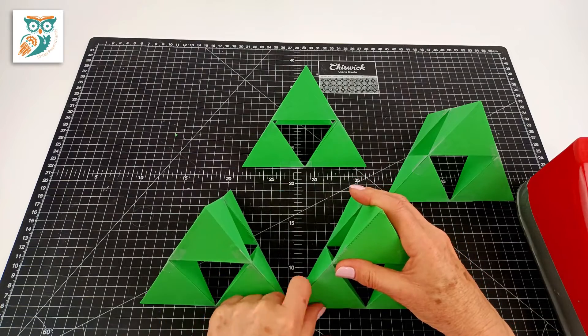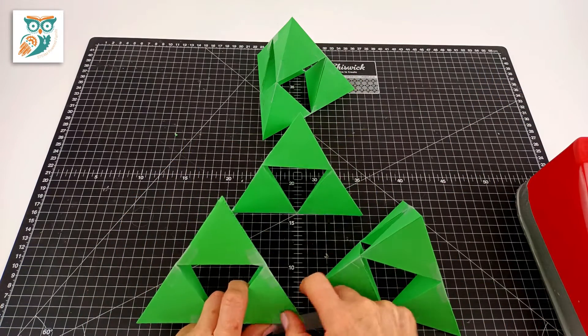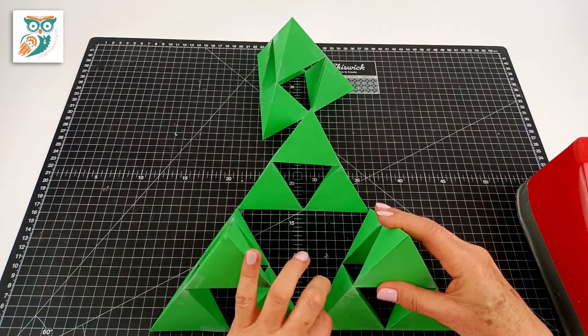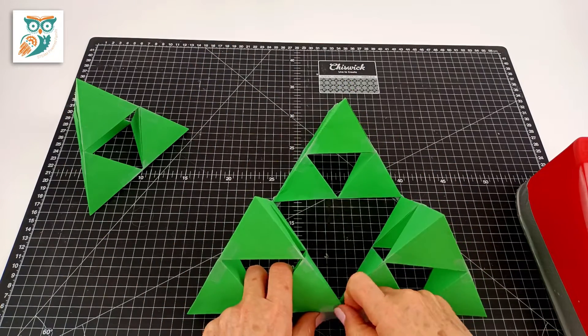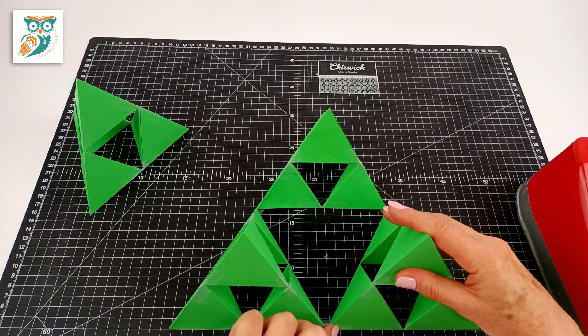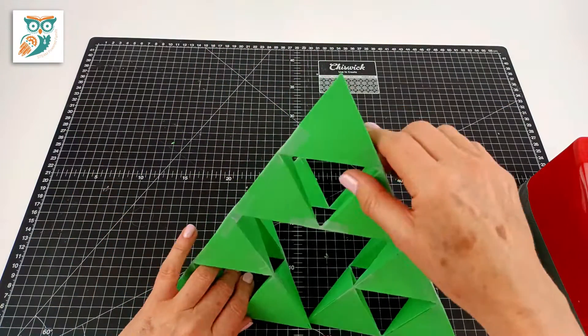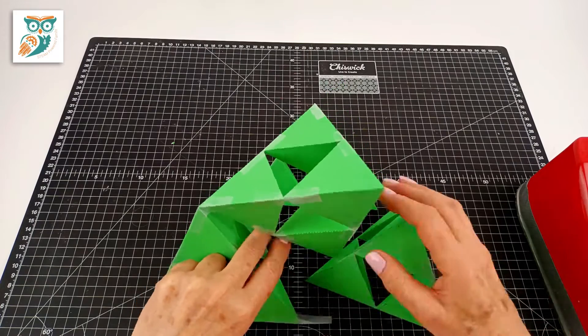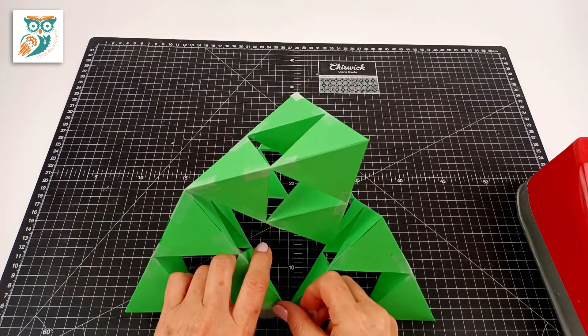And then we're going to attach each of those to each other which is going to make our really nice large Christmas tree shape. Now this can be a little bit tricky. It takes a very steady hand but it's great practice for your students to learn how to make these designs and engineer with paper.